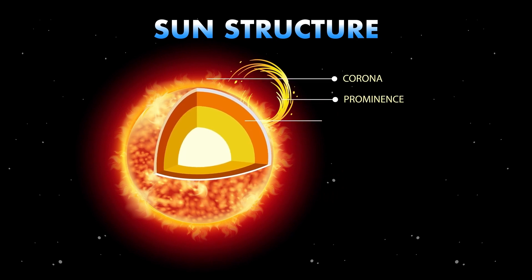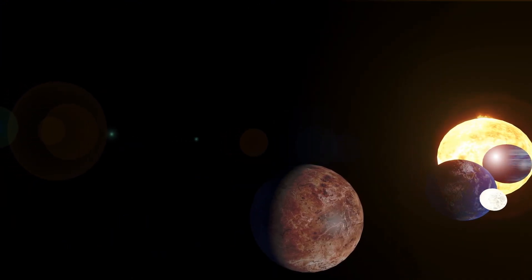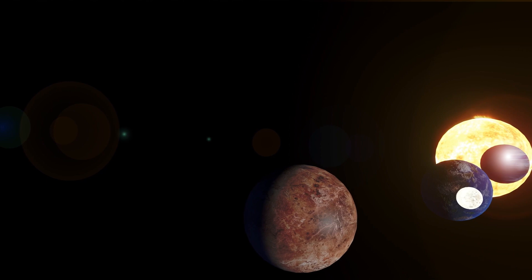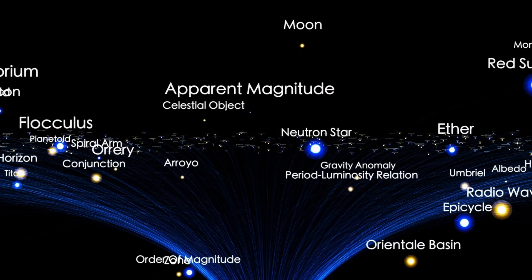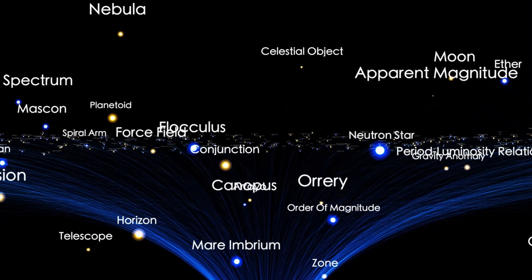Another star that's often compared to Betelgeuse is Mu Cephei, also known as the Garnet Star. Located in the Cepheus constellation, Mu Cephei is one of the largest known stars in the universe, with a radius that's about 1650 times larger than the Sun. Like Betelgeuse and Antares, Mu Cephei is a variable star and is one of the brightest stars in the Milky Way galaxy.